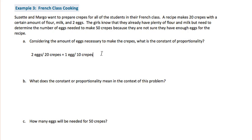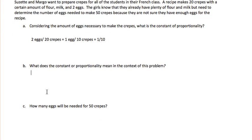If we turn that rate into a ratio, it becomes one-tenth. Ratios do not concern themselves with the types of units — they are simply the numbers. The constant of proportionality means one egg is needed to make 10 crepes. To find the eggs needed for 50 crepes, we make an equivalent ratio: one-tenth multiplied by 5 on both parts gives five-fiftieths, meaning 5 eggs are needed for 50 crepes.